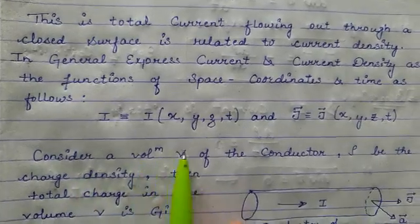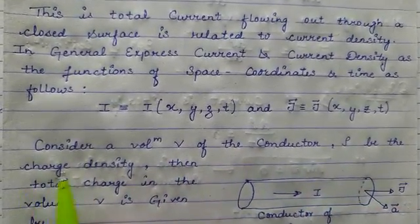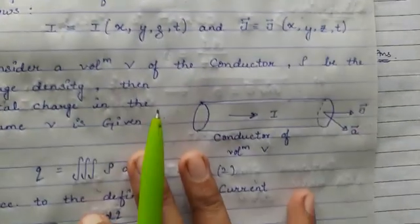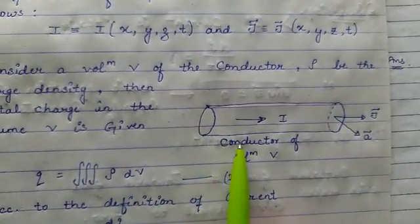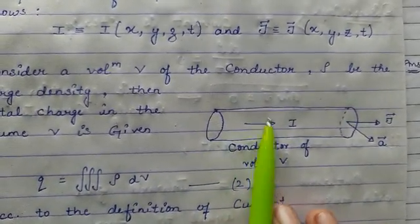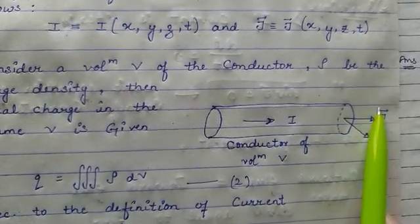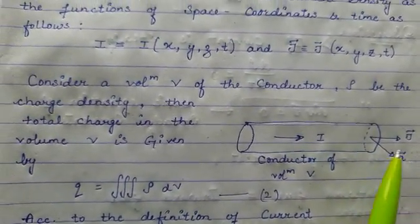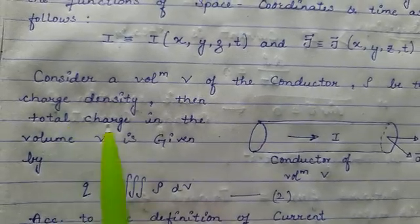Now I'm going to derive the relation for instantaneous values of current. For that, we consider a volume V of a conductor. Let ρ be the volume charge density. So I'm considering a conductor whose volume is V, I is the current flowing through it, J is the current density, and dA is the elementary area. The total current —